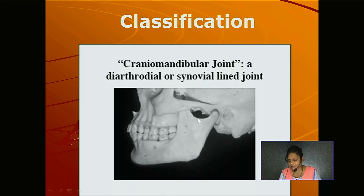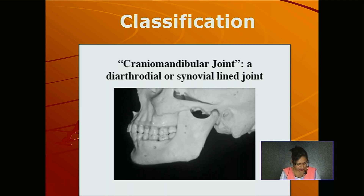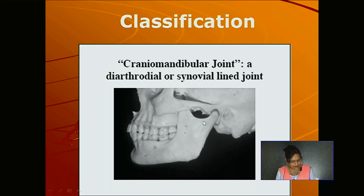The articular surfaces include the mandibular fossa and the head of the mandible. Because of the articular disc, the joint cavity is divided into menisco-temporal and menisco-mandibular cavities. The upper articular surface is formed by the anterior tubercle and the anterior part of the mandibular fossa. The inferior articular surface is formed by the head of the mandible, or condylar process of the mandible.